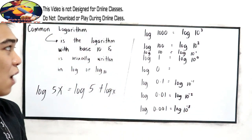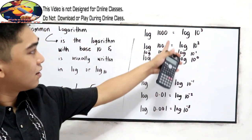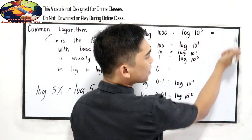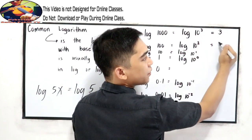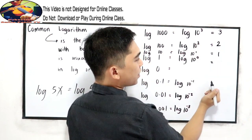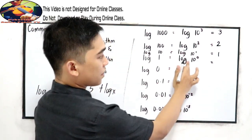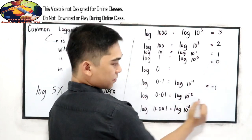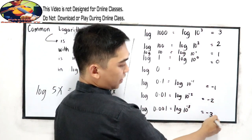What will be our value? We just write our logarithm into exponential form. The value, if you're going to evaluate, is equal to their exponent. So we have 3, we have 2, we have 1, we have 0, we have negative 1, we have negative 2, and we have negative 3.